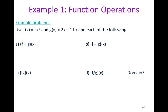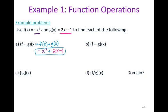So if I look at this example, f of x is negative x squared (my purple function) and g of x is 2x minus 1 (my pink function). The first problem says f plus g of x. I'm going to rewrite it as f of x plus g of x, which gives me negative x squared plus 2x minus 1. There's nothing to combine, so that is your final answer.